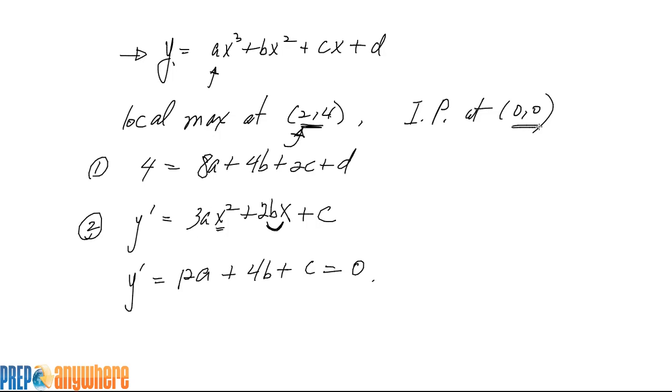Inflection point (0,0). This actually means two information. First of all, (0,0) is on this graph. So that means if you replace x with 0, y will be 0. And we get d is equal to 0 because all the x terms turn into 0. We can essentially erase that.